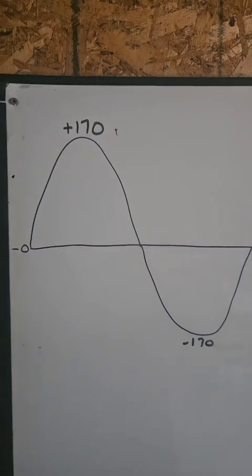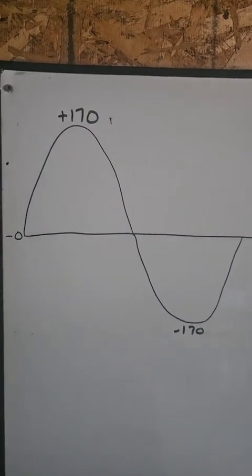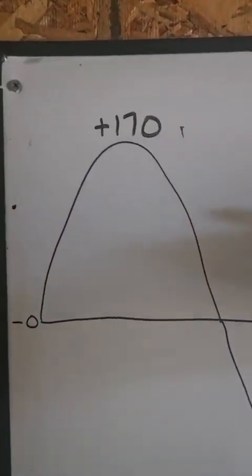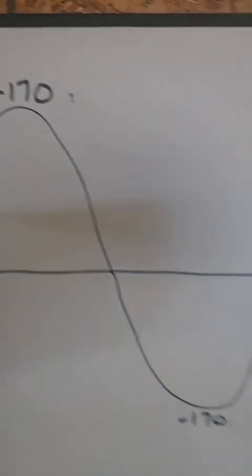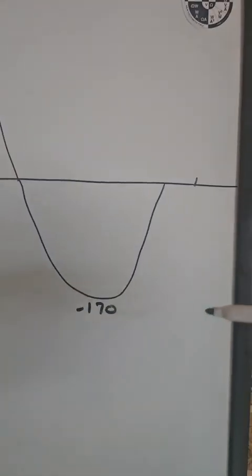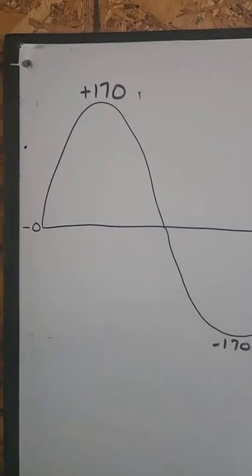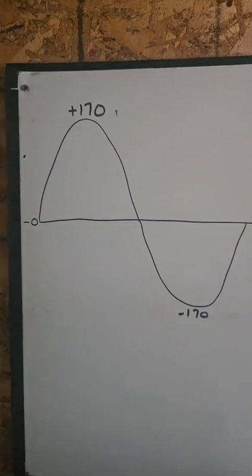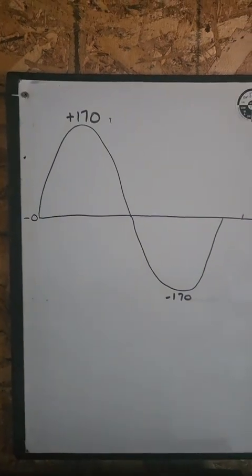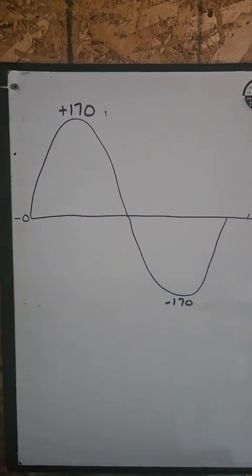So then you might say, okay, let's take the average. The average doesn't work either, and let me show you why. When half of your measurements are positive and half are negative, they will always average out to zero. So the average voltage of that wave is zero, even though we know its average ability to do work is not zero.